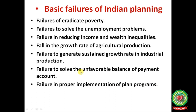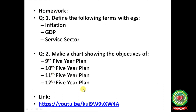Students, hope you have understood the topic of five year plans. Now it's time to note down the homework. Define the following terms with examples: inflation, GDP, and service sector. Second question: make a chart showing the objectives of the 9th, 10th, 11th, and 12th five year plans. Please also go through the links provided for more clarity. Hope you all will note down the homework in your copy for better learning. Thank you for listening, students. See you next time.